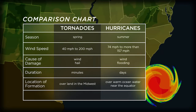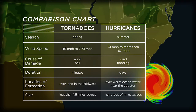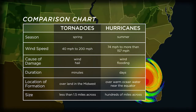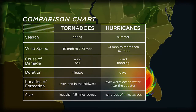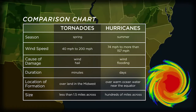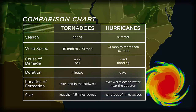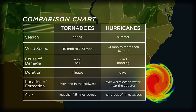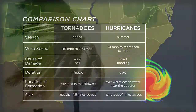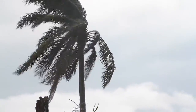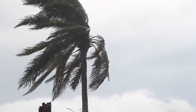Hurricanes differ from tornadoes in several ways other than when they occur. Tornadoes have a higher wind speed, form quickly, and last a relatively short amount of time. Hurricanes last days, form over warm ocean waters, and span a much greater area, up to hundreds of miles. Although the winds of a hurricane are not necessarily as fast as those in a tornado, they are accompanied by flooding that can devastate a region.